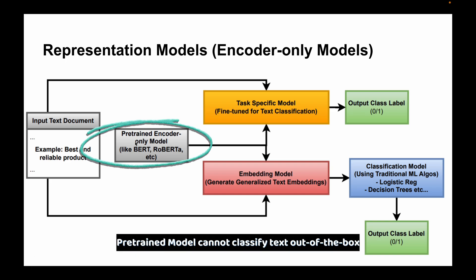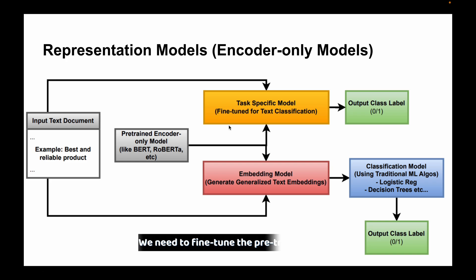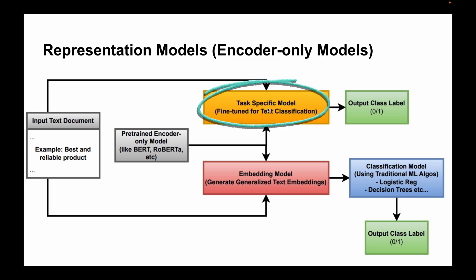This model out of the box is not trained to classify text. We need to fine-tune it for text classification, which is why we call it a task-specific model. Once this task-specific model is trained, it can be directly used on the input text document to output the class label. This is the first approach.